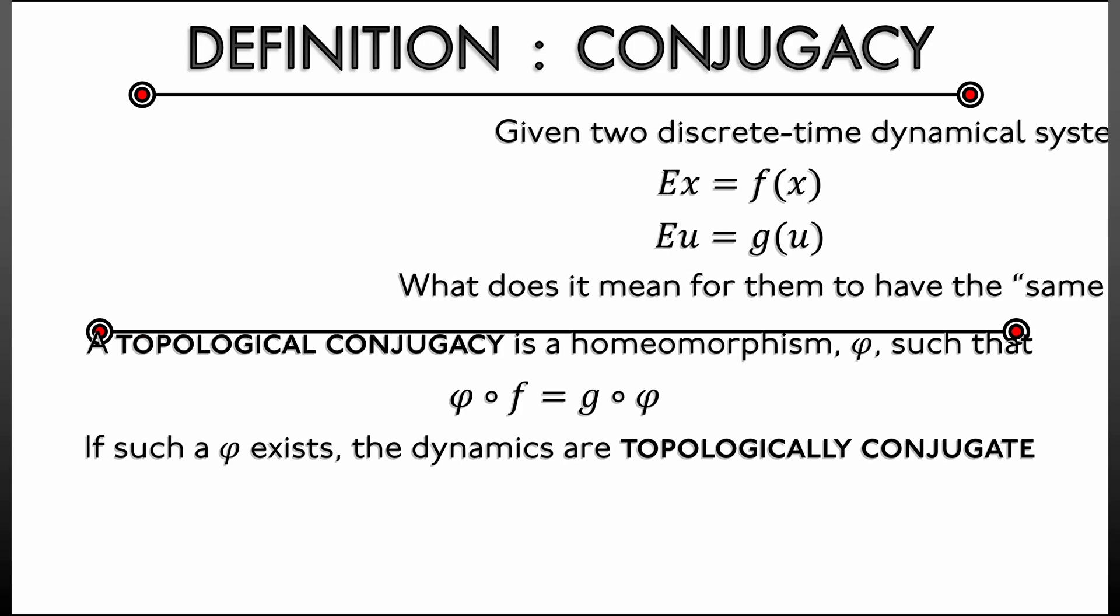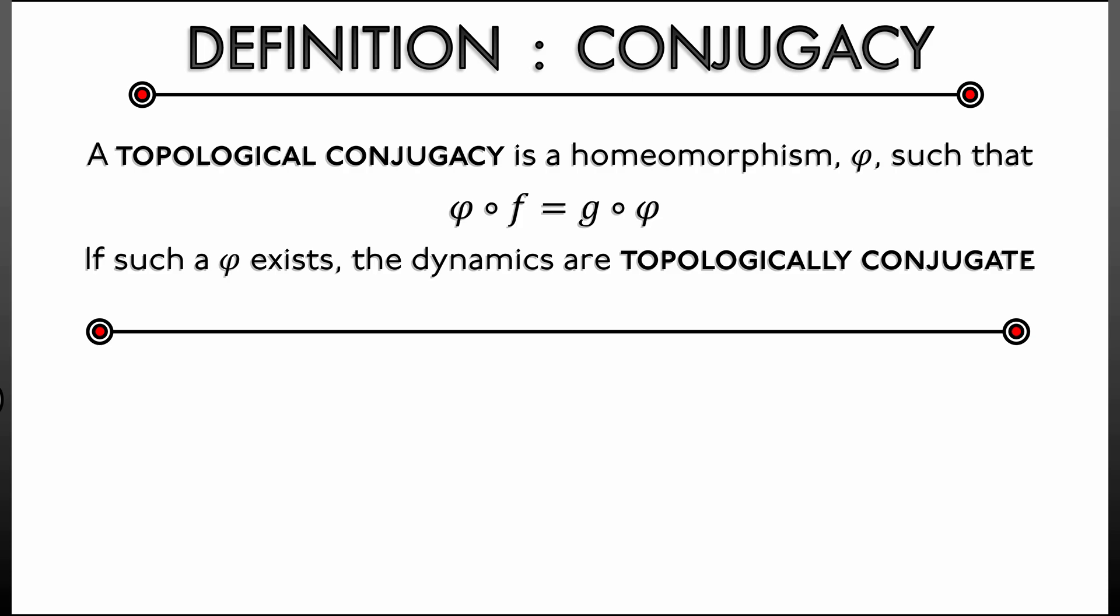Well let's think. Let's say that we start off with our first dynamical system, Ė x = f(x). And what we're going to do is something like a change of variables or a change of coordinates using this topological conjugacy φ. Now φ is a homeomorphism